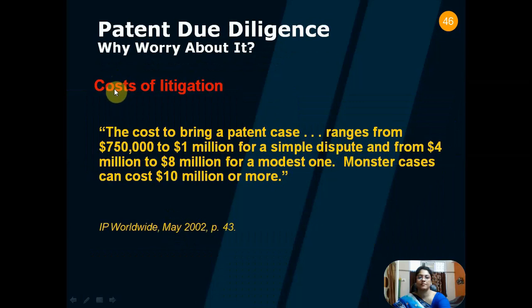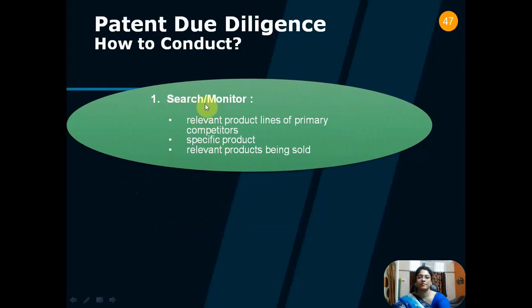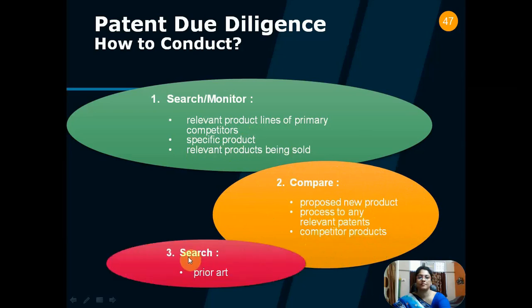The cost of litigation: the cost of bringing a patent case ranges from $750,000 to $1,000,000 for a simple dispute and from $4,000,000 to $8,000,000 for a modest one; monster cases can cost $10,000,000 or more — as reported in IP Worldwide, May 2002, page 43. To conduct patent due diligence, you should search or monitor patent searches on relevant product lines of primary competitors, conduct patent searches directed to the specific product being introduced, monitor relevant products being sold, compare the proposed new product or process to any relevant patents or competitor products, and if necessary, search for prior art.